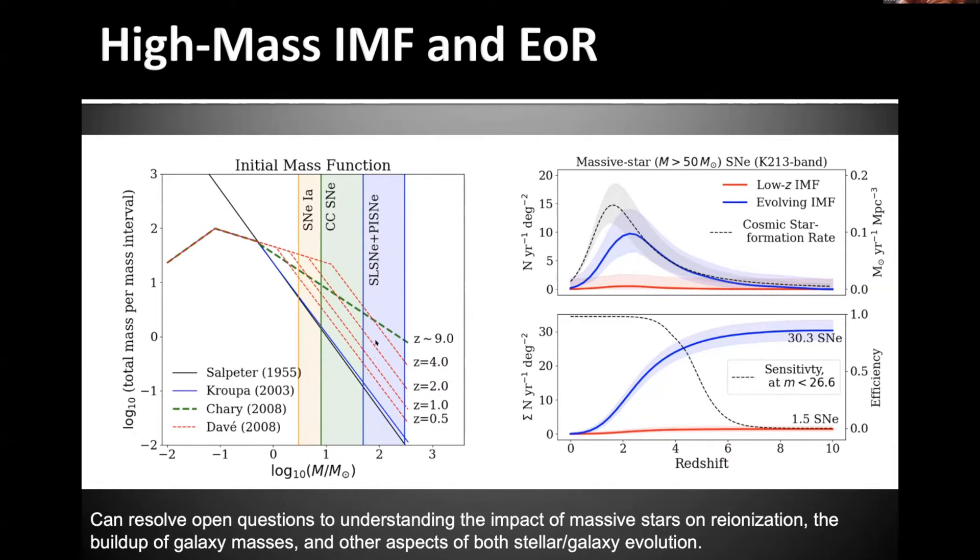Highlighted here is just to point out that when you're talking about stars over 50, 100 solar masses, you really need to start looking and building up your sample of superluminous and pair instability events. These things are rare to distinguish between different IMF scenarios. Shown here on the right are the number of high mass supernovae expected per year per degree as a function of redshift and the cumulative function as well. The explosion function really peaks between about two and four in redshift. But if you really want to distinguish between all the different IMF scenarios at a statistically significant level, you really need a wide field of view and to go pretty deep. Ultimately, such a sample can resolve open questions to understanding the impact of massive stars on reionization, the buildup of galaxies, and all other sorts of aspects of stellar and galaxy evolution.